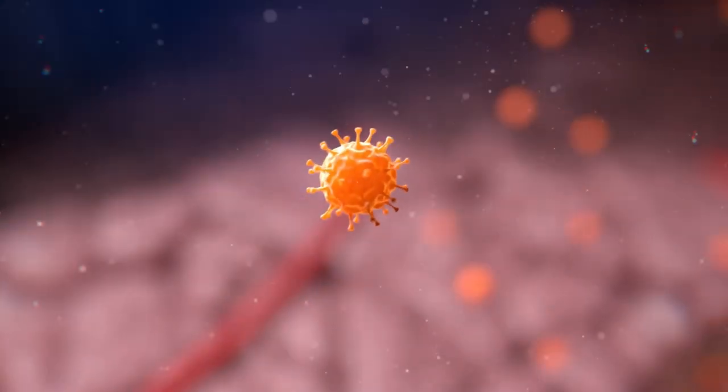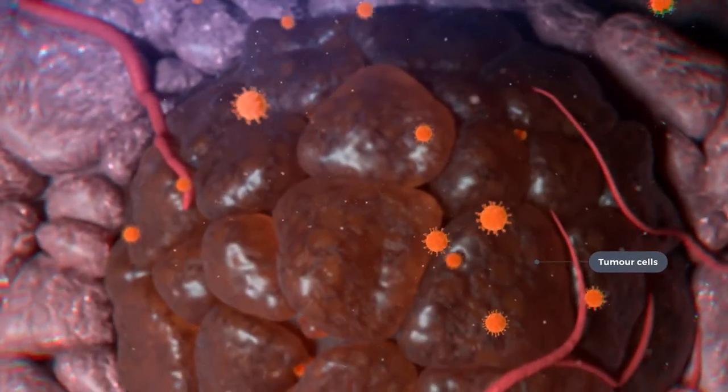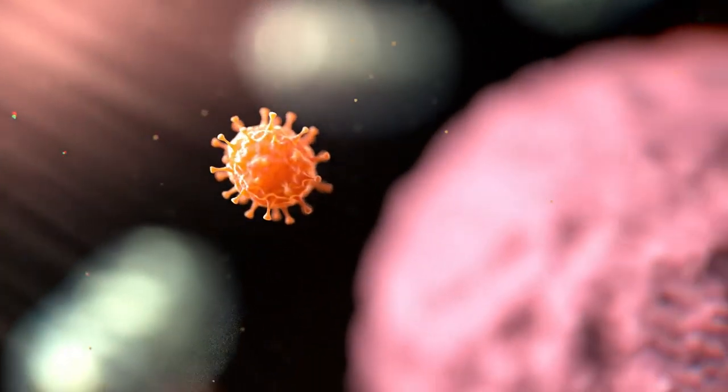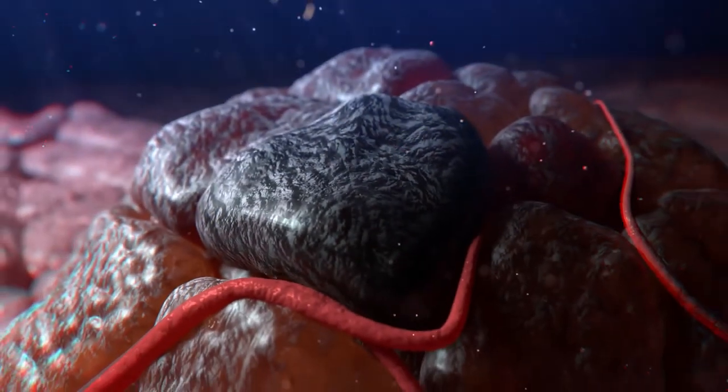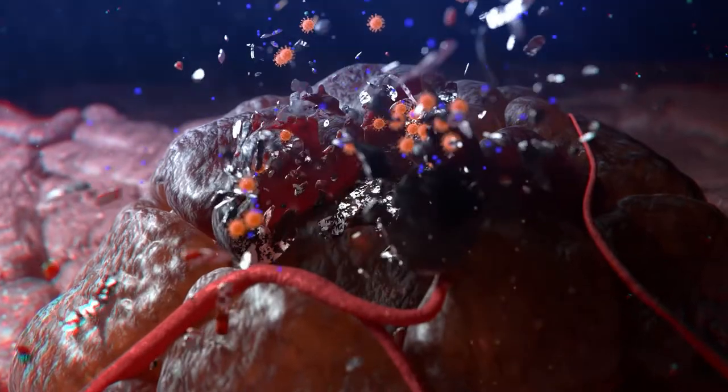Preclinical data shows that CF33 selectively targets tumor cells and spares healthy cells. Once CF33 enters a tumor cell, it replicates and eventually causes the tumor cell to break down and die, releasing cancer antigens.